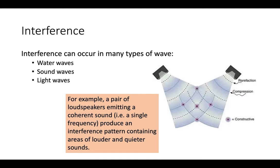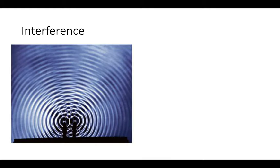You don't normally notice this because no one sits in a room with two speakers producing exactly the same frequency. In a ripple tank, two small dippers just touching the water's surface vibrate at a constant frequency, creating a coherent source of water waves. The two sources emit waves of the same frequency, and depending on position on the water surface, there is a certain phase difference between the waves.